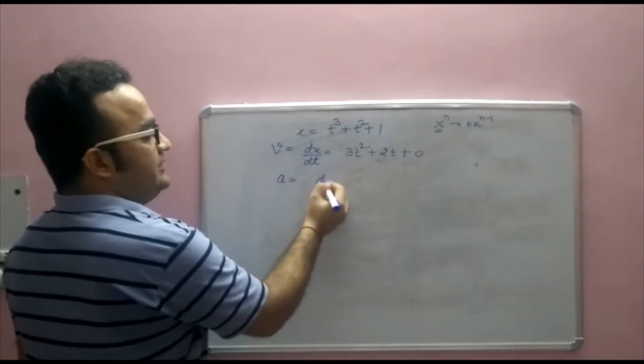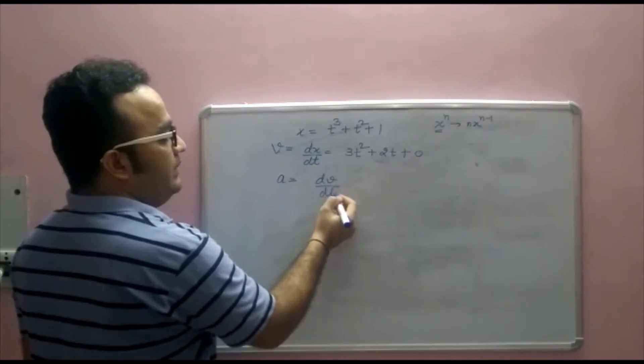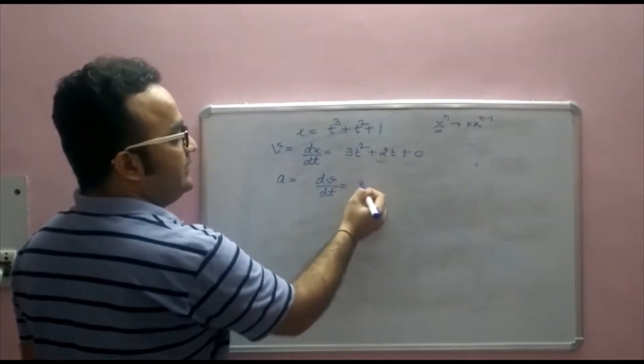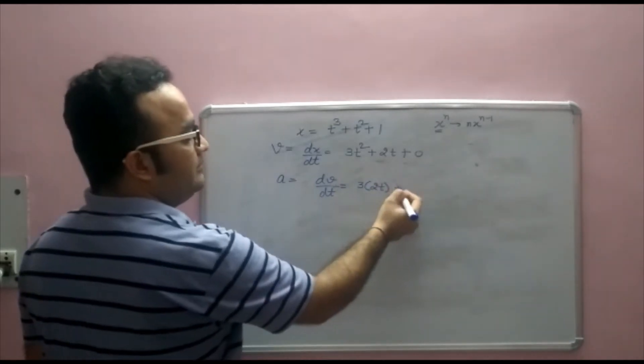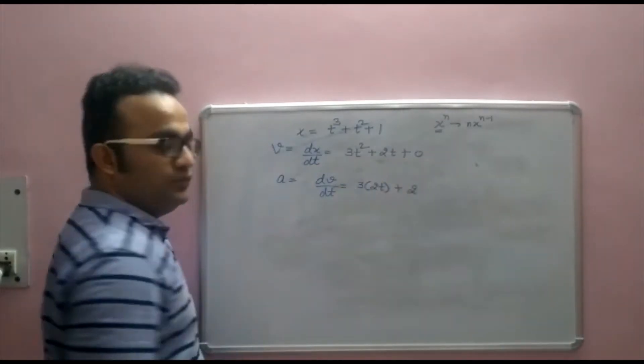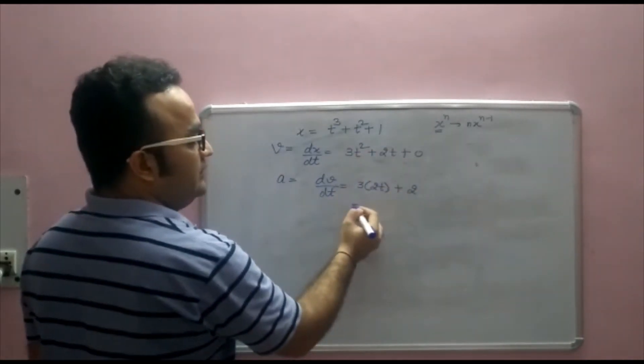Similarly we can find the acceleration also which is dv by dt. So here we write 3 as it is. The differentiation of t square is 2t plus 2t is 2